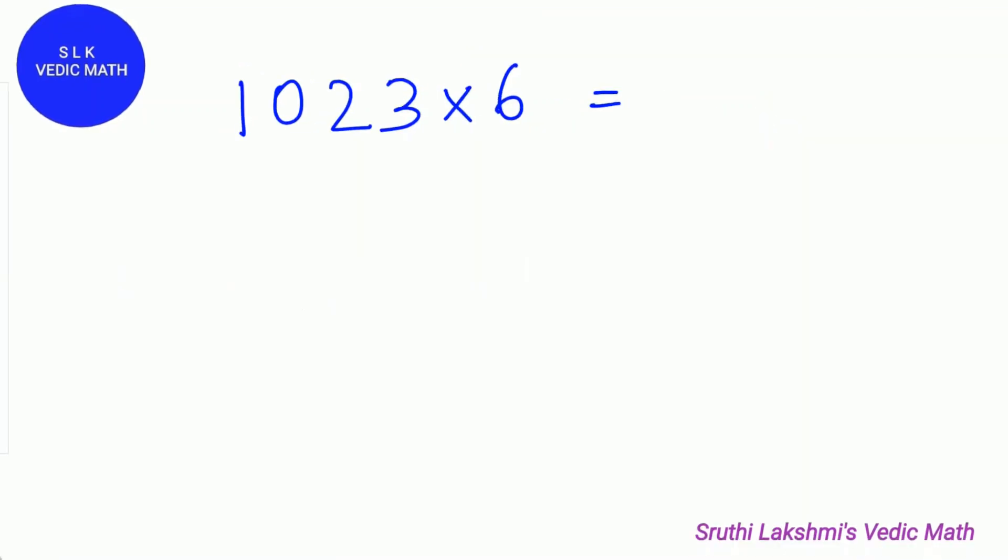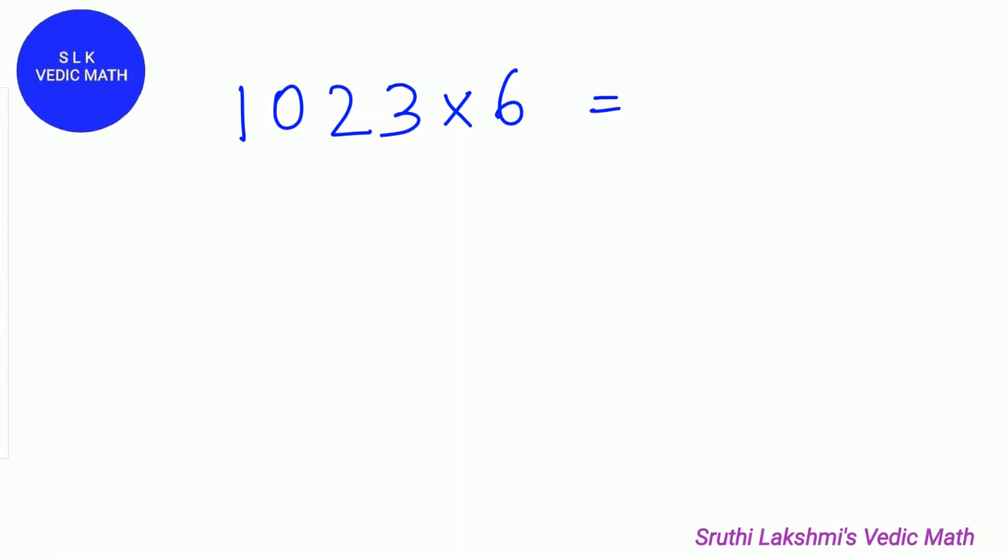One more example. 1023 times 6. 1023 is an odd number. If it is an odd number, we add 5 to the last digit. So 3 plus 5 is 8. So write down 8.